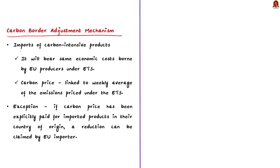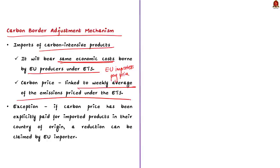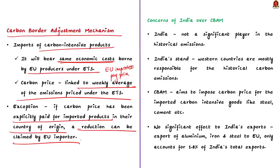Under CBAM, imports of certain carbon intensive products — cement, iron, steel, electricity, fertilizers, aluminium, and hydrogen — will have to bear the same economic cost borne by EU producers under the ETS. If any EU importer imports carbon intensive products from countries with no carbon pricing, the importer needs to pay a price linked to the weekly average of the emissions price under the ETS. However, where a carbon price has been explicitly paid in the country of origin, a reduction can be claimed by the EU importer.